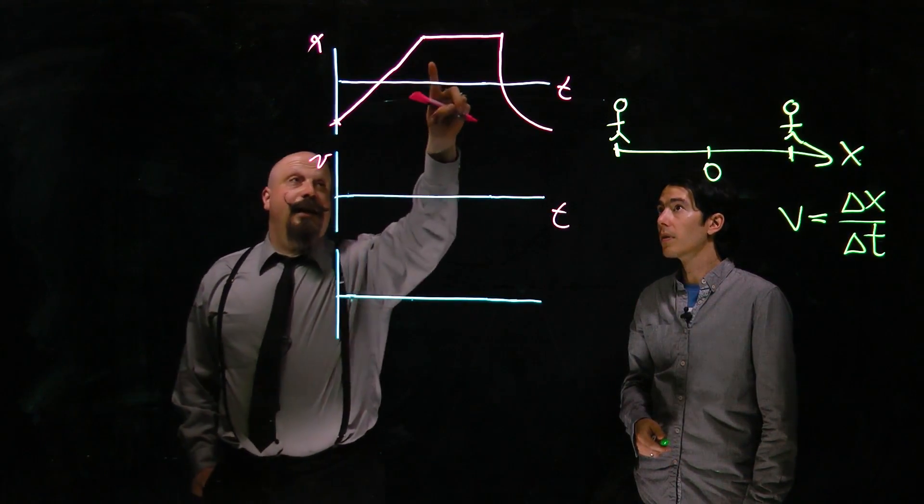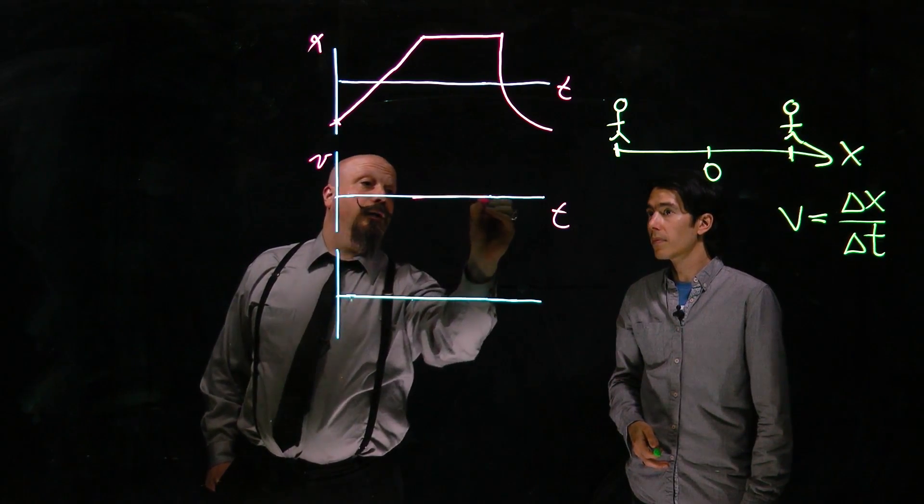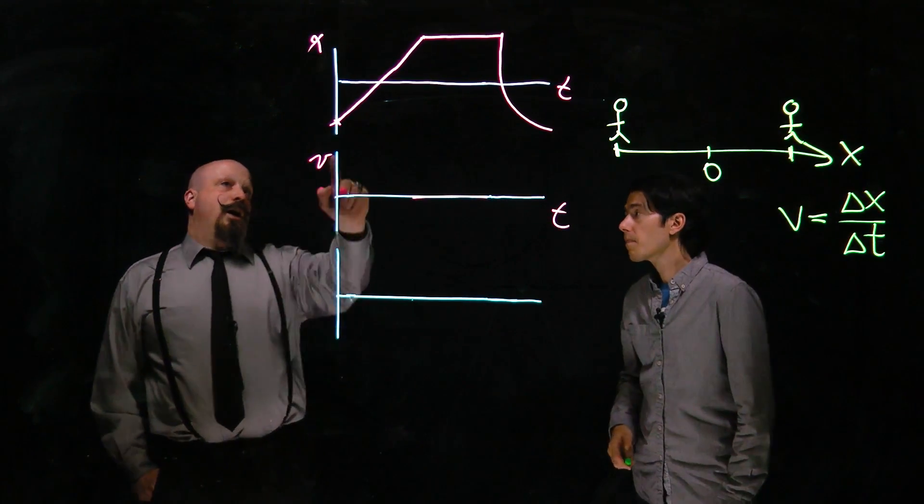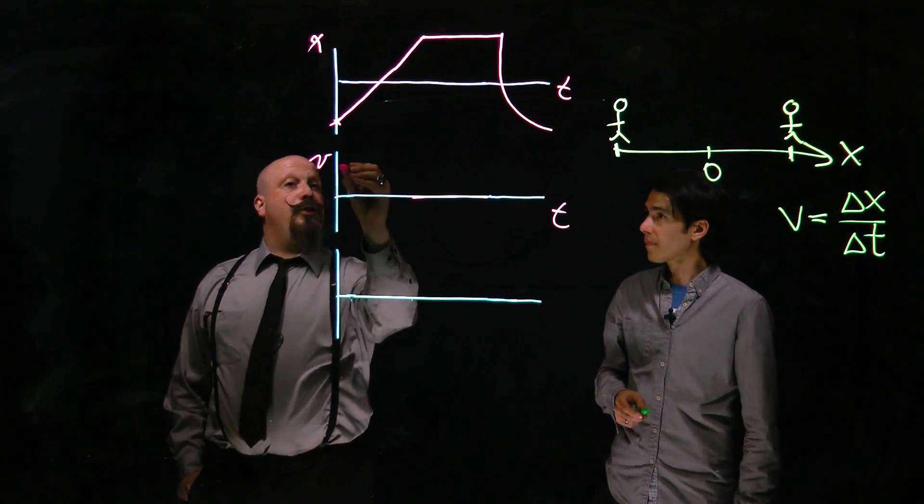Easiest one to take a look at is the center section. You're not moving, so your velocity at that point is literally zero, just like the slope is. Here you have a constant value of slope, meaning that you have a constant value of velocity. It's just some number, leaving us with a trickier part here at the end now.